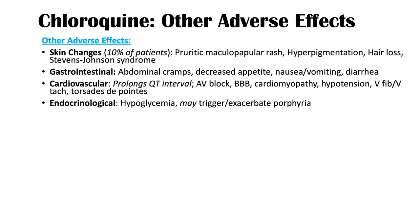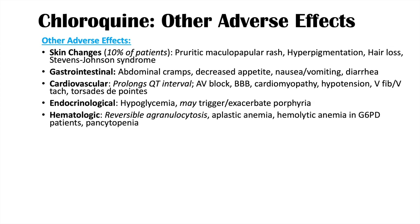Endocrinological adverse effects include hypoglycemia — low blood sugar — and these medications may also trigger or exacerbate porphyria. Hematologic adverse effects include reversible agranulocytosis, where granulocytes become very depleted but this can be reversible. Aplastic anemia can also occur, as well as hemolytic anemia — especially in individuals with glucose-6-phosphate dehydrogenase deficiency — and pancytopenia.